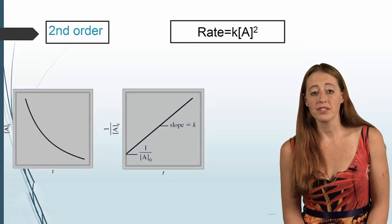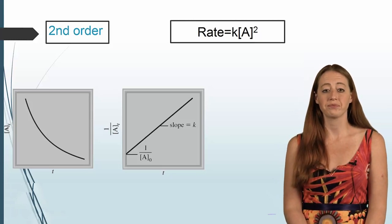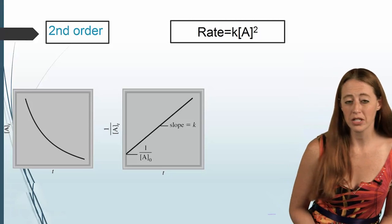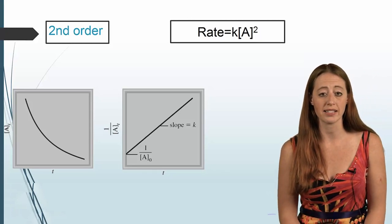So if we look at our rate first, we have rate equals K concentration of A squared. Now, much like before, let's just give you the integrated rate law since we don't really do calculus in this class.